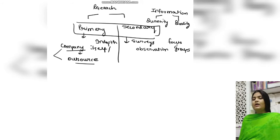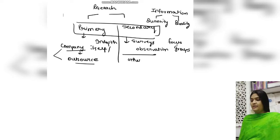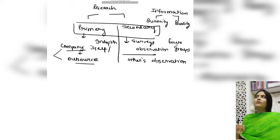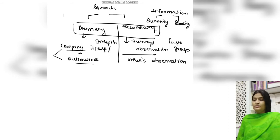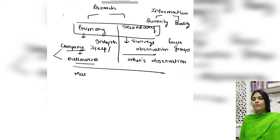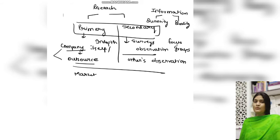Whereas in secondary data, what they do is get it from others' observation. For example, you can go to your competitor's website and get data from there, then try to analyze it and find what interpretation can be drawn. Whenever you are doing either primary or secondary research, you are doing it to know about the market — the attributes, the consumer buying behavior. These are the two important things.